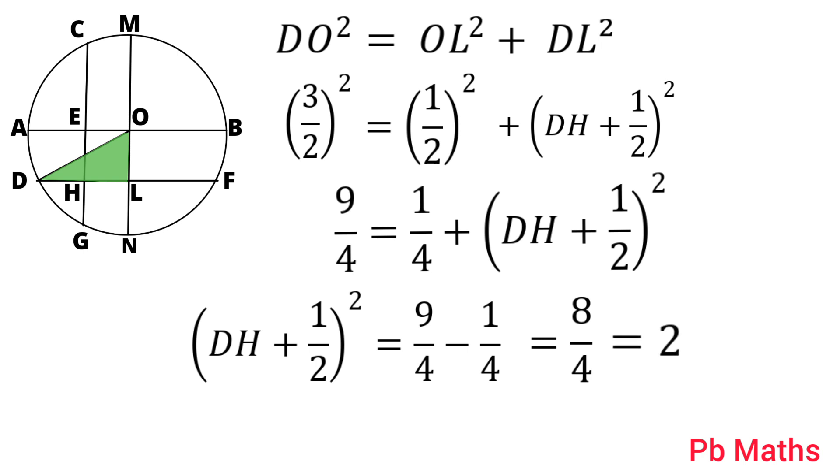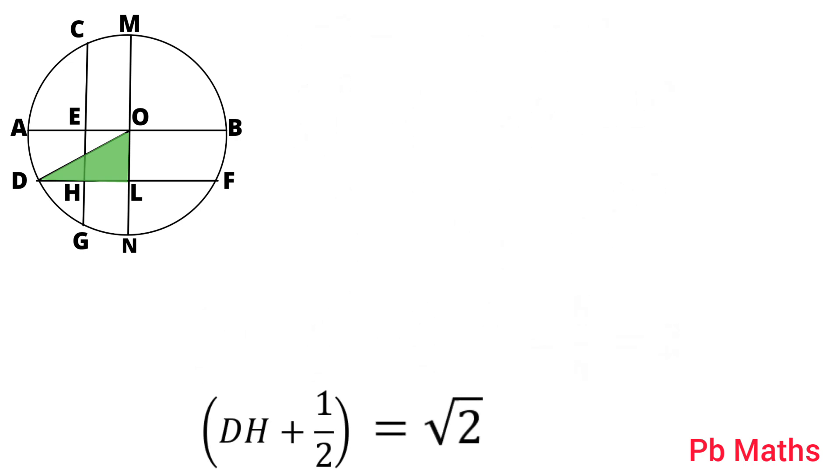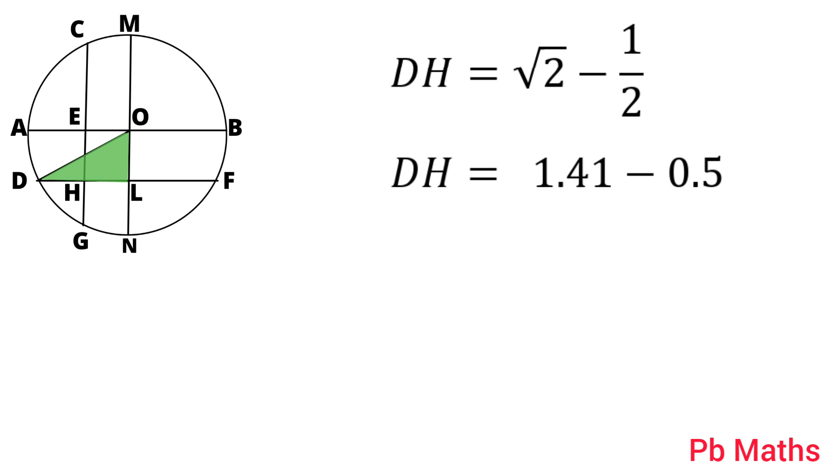Then, DH + 1/2 equals √2. DH equals √2 minus 1/2, which is approximately 0.91 cm. That is the value of DH.